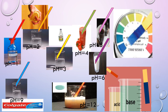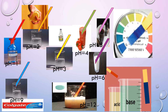By observing the color change, we can determine the amount of hydrogen ion present. In alkaline solutions, dipping the pH paper will give a blue color, while in acids it will give a red color.